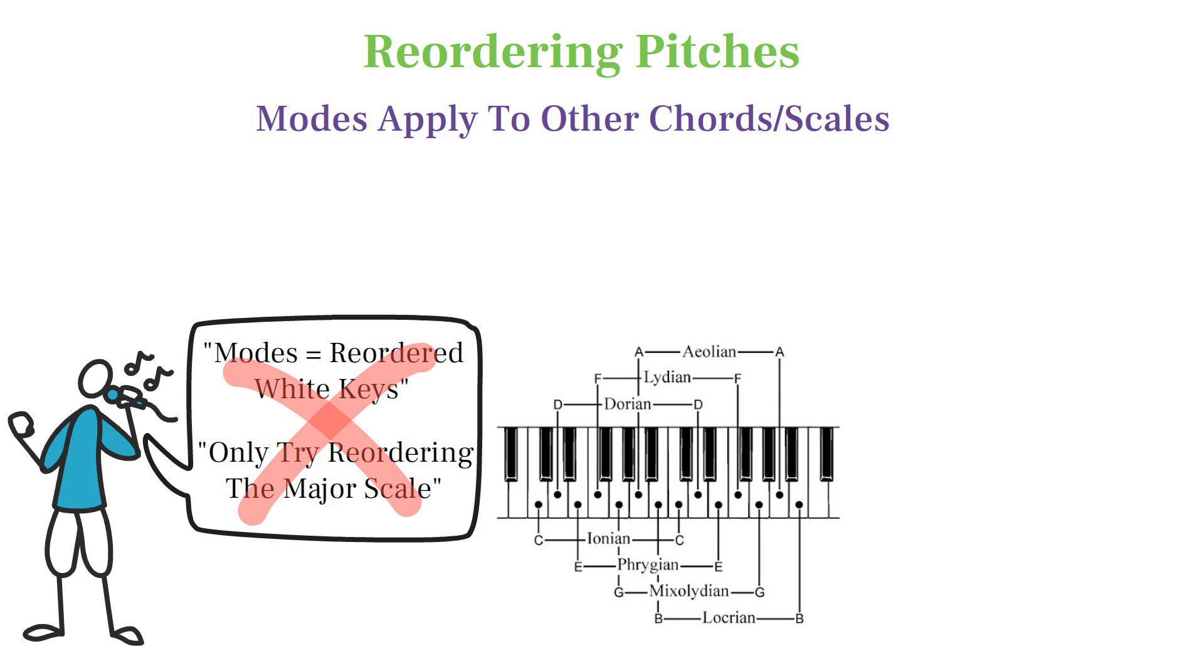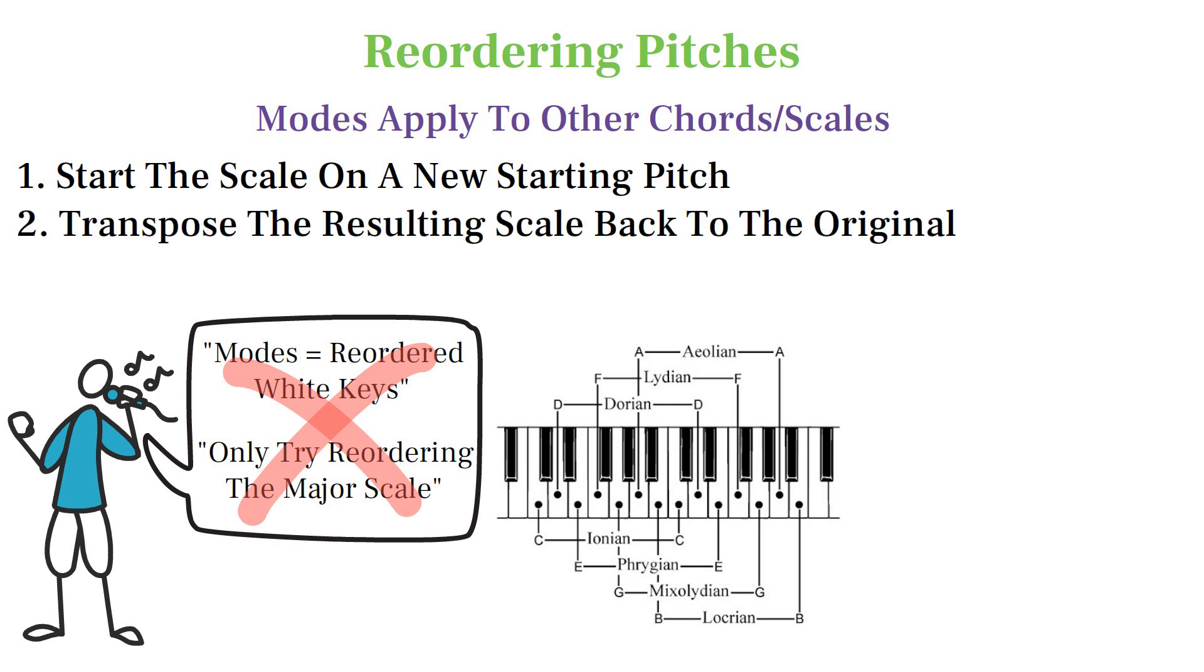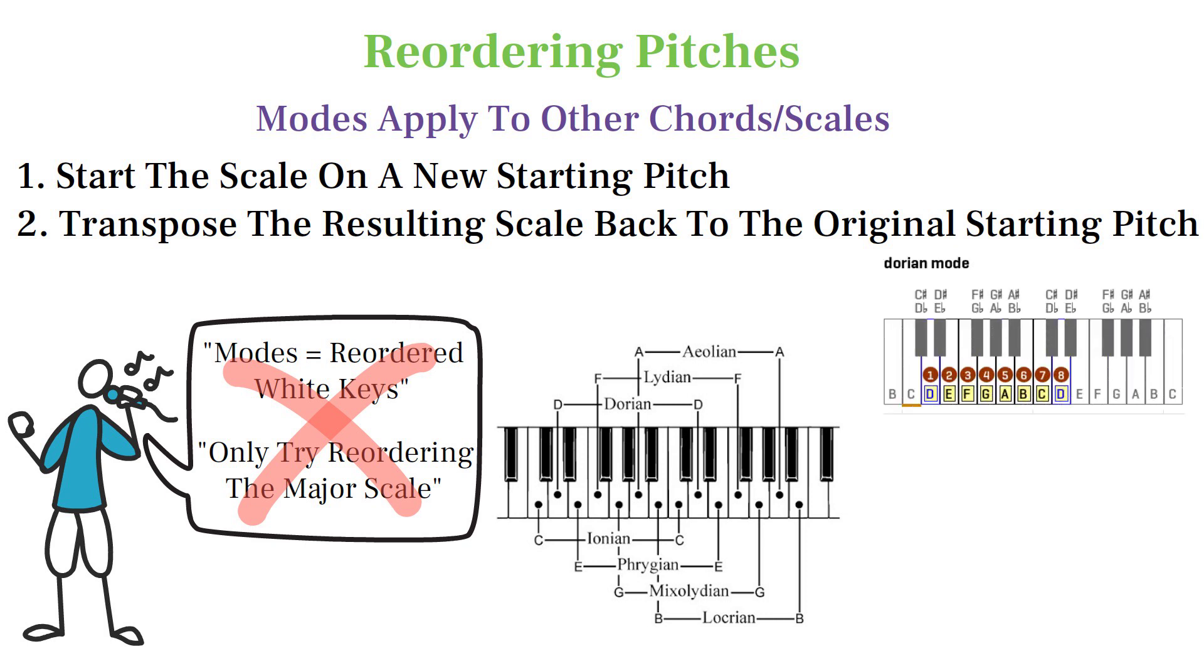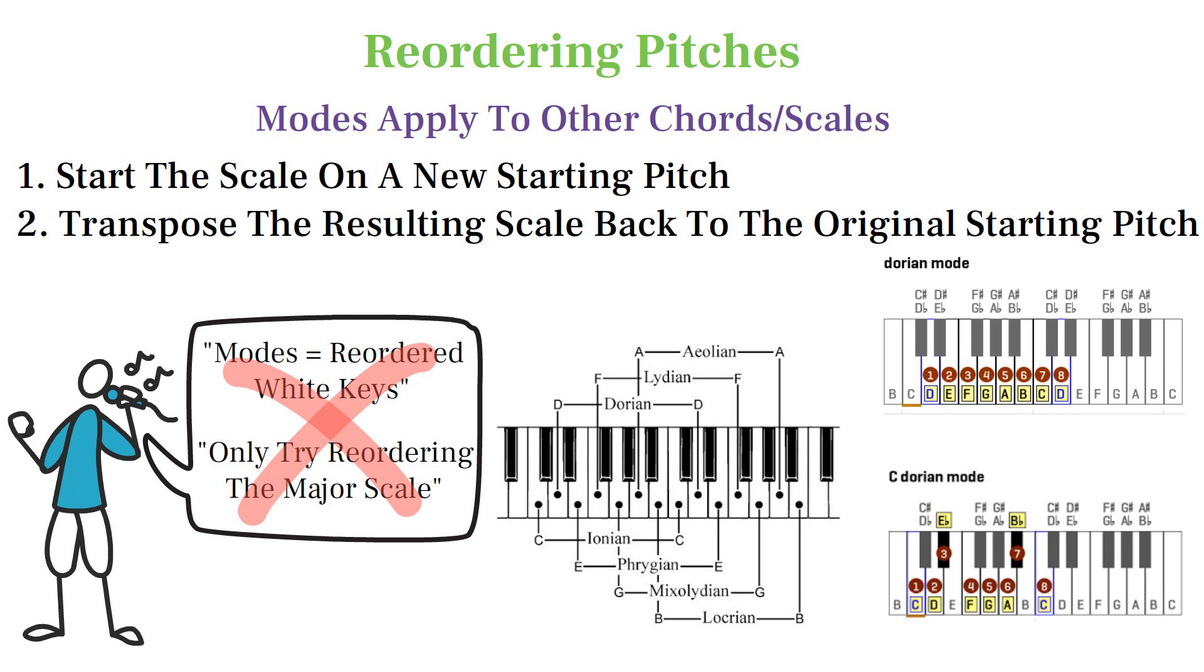To compare modes and understand how they relate to each other, we must compare them from the same starting pitch. While it is a good introduction to say that the white key starting on D makes Dorian, we should then transpose that scale back to C to compare it to its other modes, which shows us that it is just like the minor mode with a raised sixth scale degree.